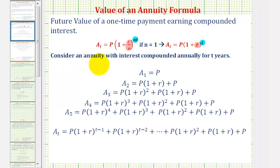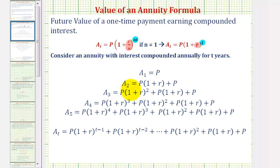We can use a geometric series to represent the value of an annuity paying interest compounded annually for t years. So a_1 equals p, the regular deposit into the account, made at the end of each compounding period. A_2, the value after two years, equals p times the quantity one plus r — representing the first-year deposit plus interest — plus p, the deposit for year two. A_3, the value after three years, equals p times the quantity one plus r squared, plus p times the quantity one plus r, plus p, the deposit at the end of year three.